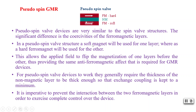In a pseudo spin valve structure, a soft magnetic material is used for one layer and a hard ferromagnetic material for the other. This allows the applied field to flip the magnetization of one layer before the other, because the soft layer reverses more easily compared to the hard one. This provides the same anti-ferromagnetic effect required for GMR — without using an actual anti-ferromagnetic layer.